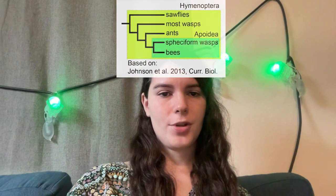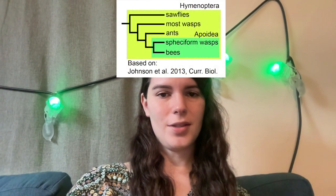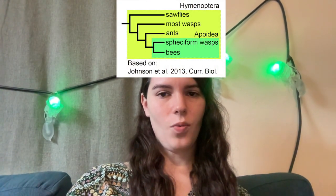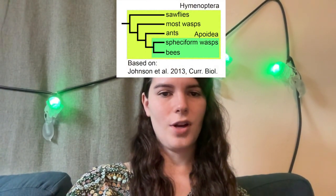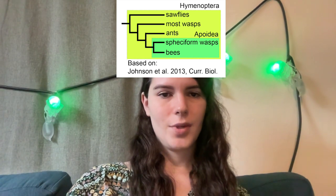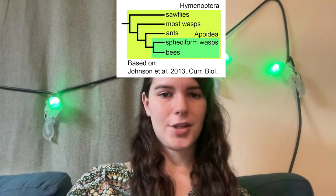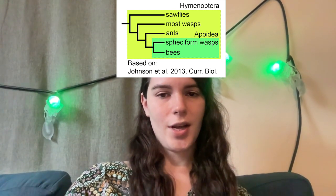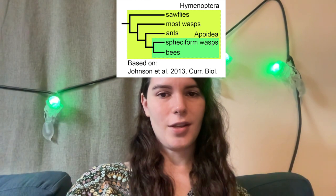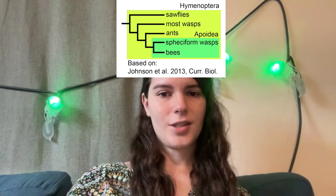Properly, Hymenoptera includes not just the ants and the bees, but also the wasps and related insects called sawflies. So bees, like ants, are actually intermingled with wasps in an evolutionary sense — they have a common ancestor.